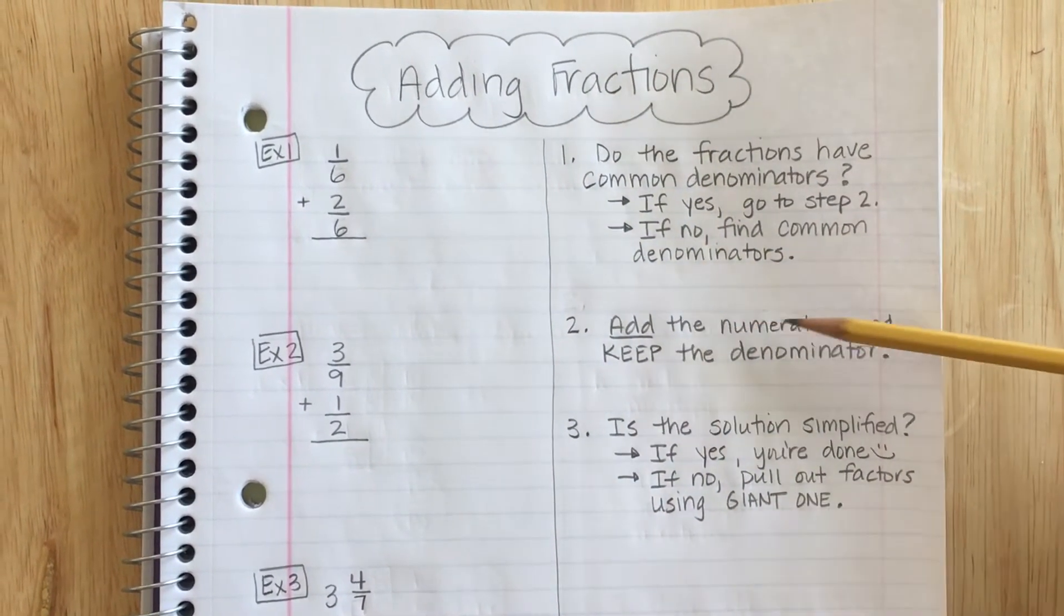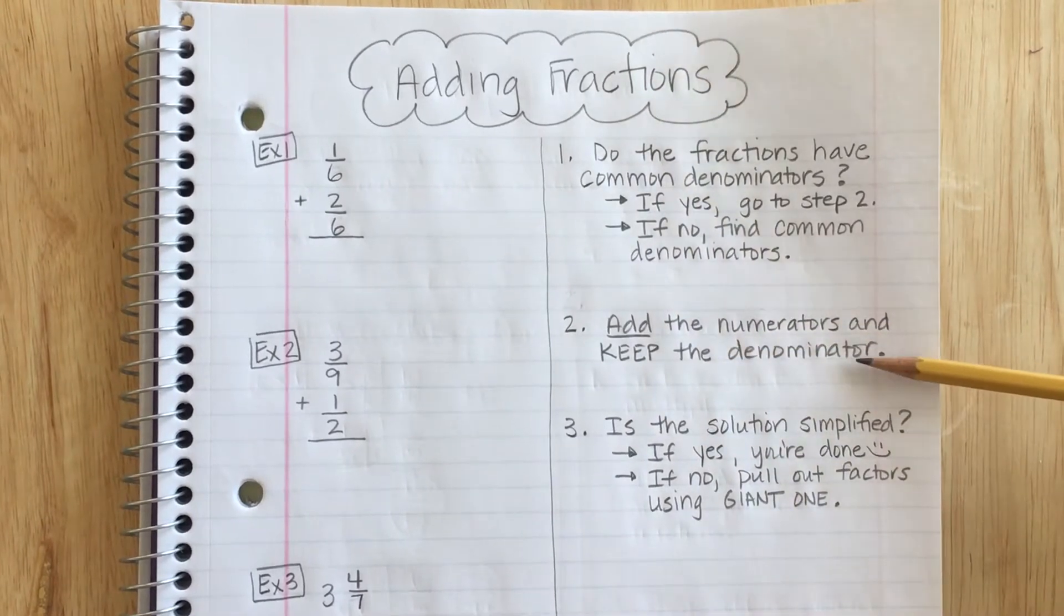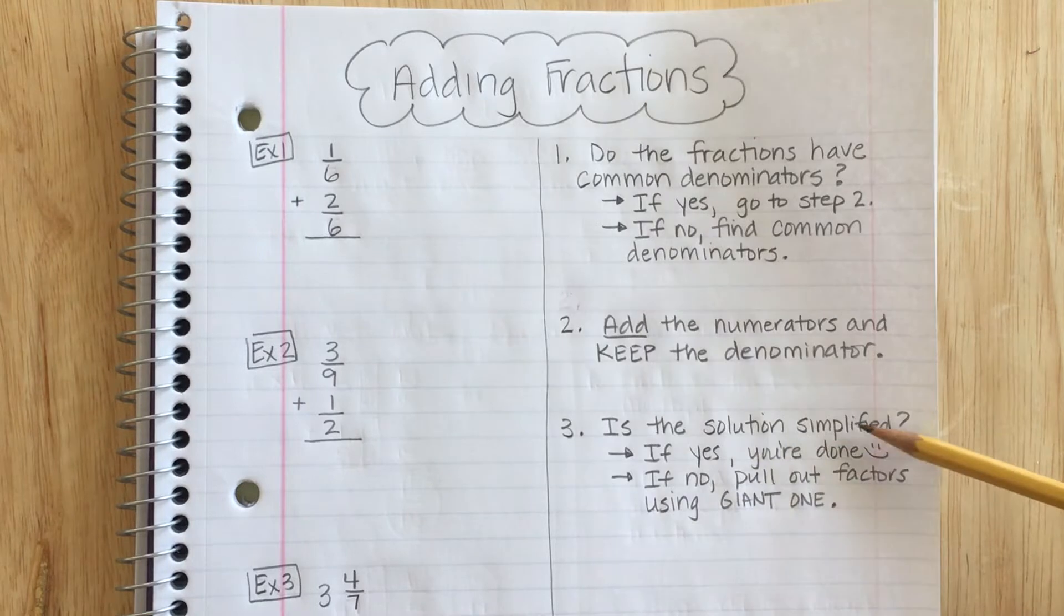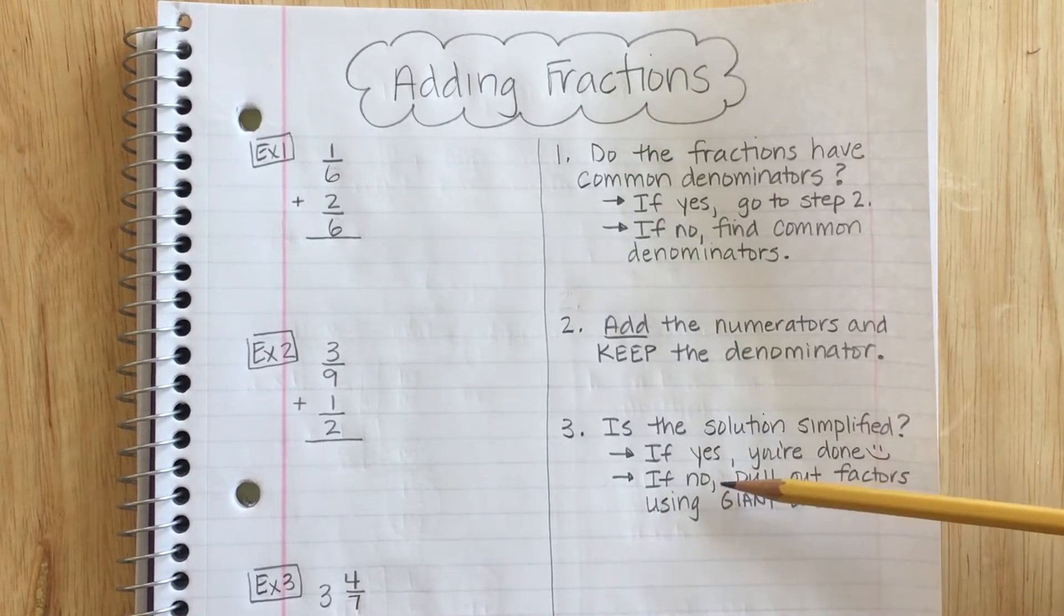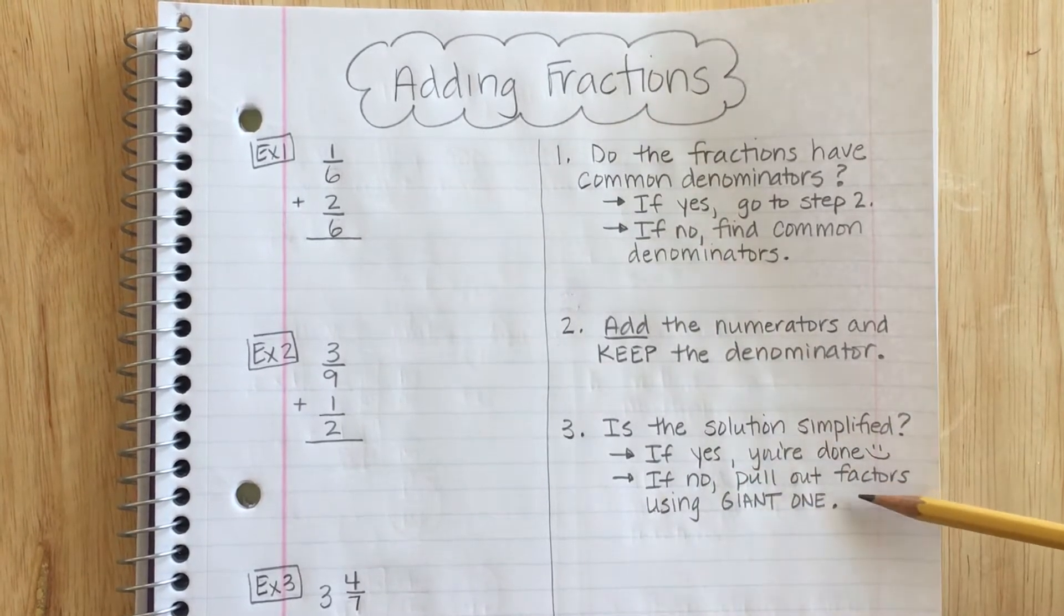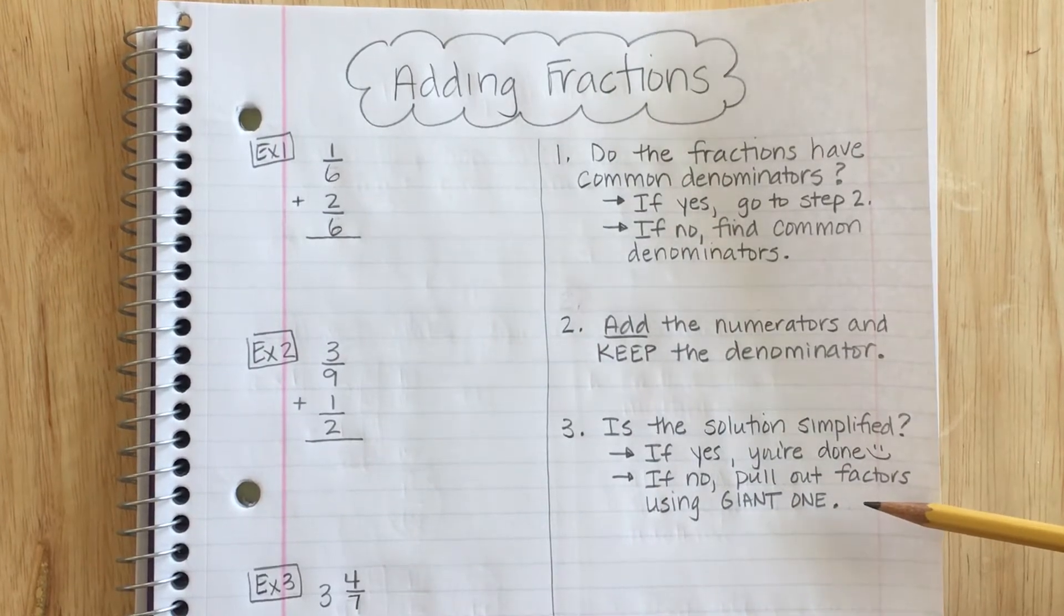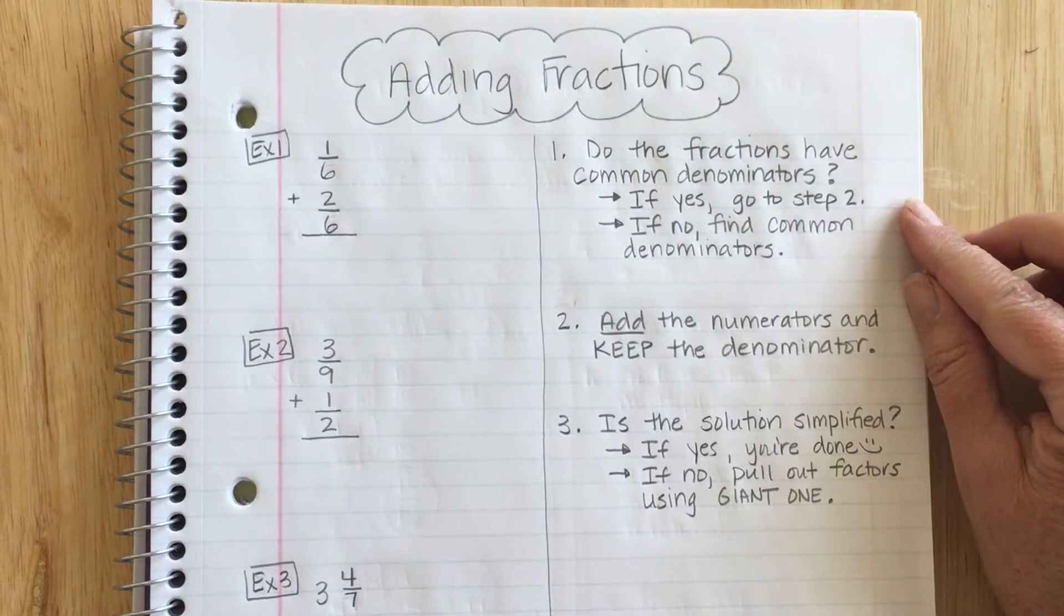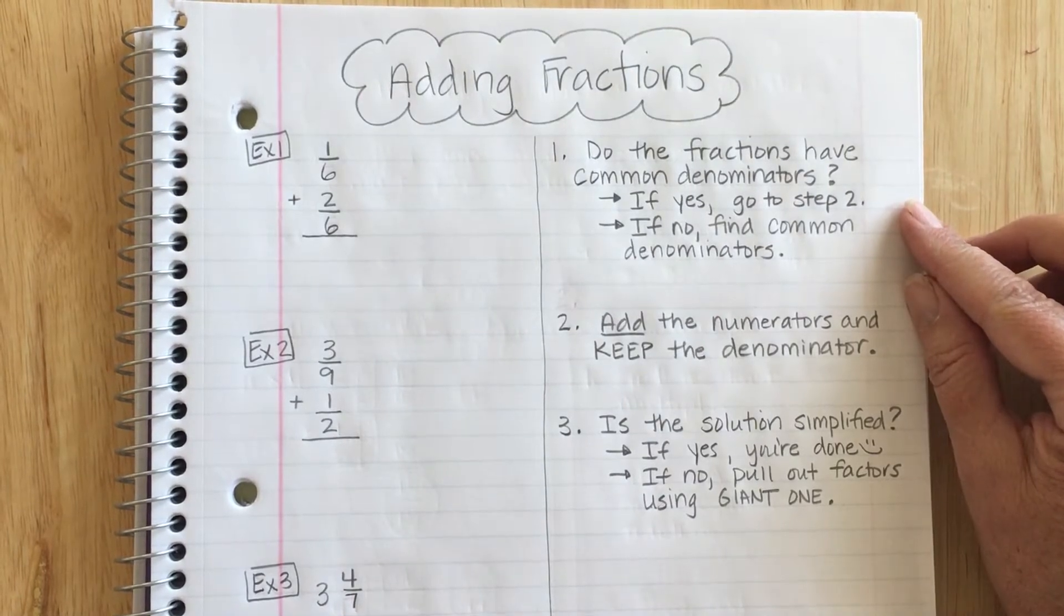Step two is to add the numerators and keep the denominator. And then step three is to decide if the solution is simplified. If yes, then you're done. If no, then you're going to pull out factors using giant one. Now if you need to pause the video and take notes, go ahead and do that. Then start the video when you're ready to look at the examples.